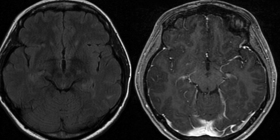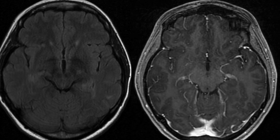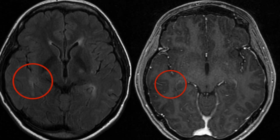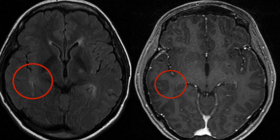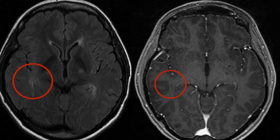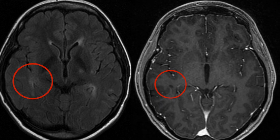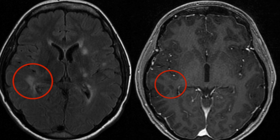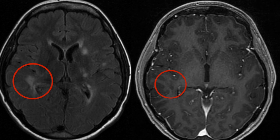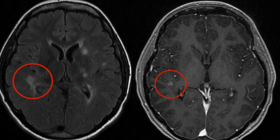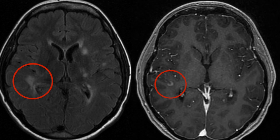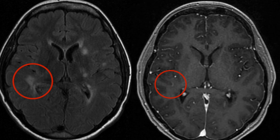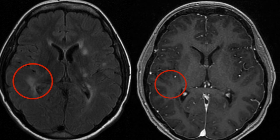As we continue to scroll up we find another large concerning lesion, again highlighted in red. This location is the posterior frontal lobe on the right, and after the administration of contrast we see abnormal contrast enhancement in a U-shaped pattern. This is highlighting the juxtacortical location.